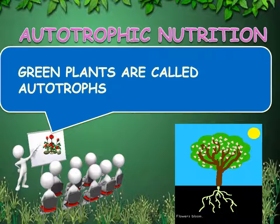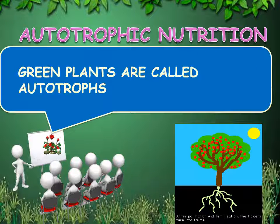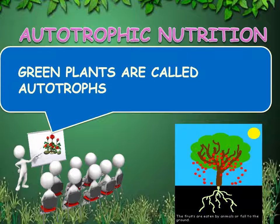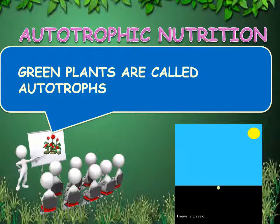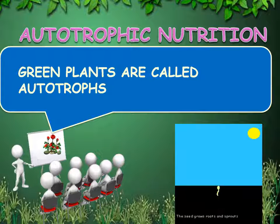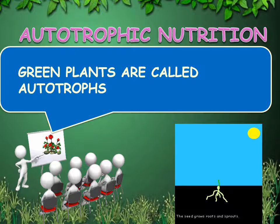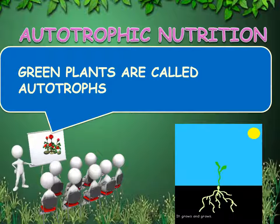Green plants are called autotrophs because they synthesize their food themselves. But why only green plants? What about those plants which are not green? We will also discuss about them in our next class.